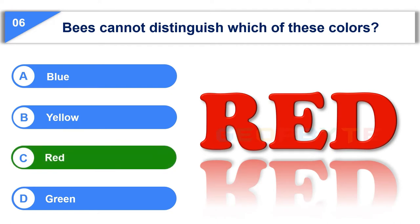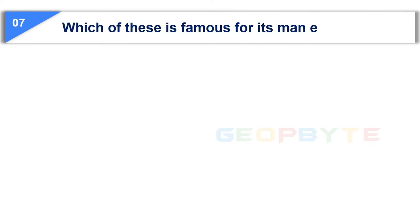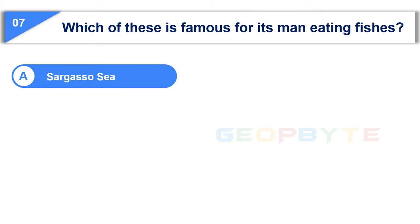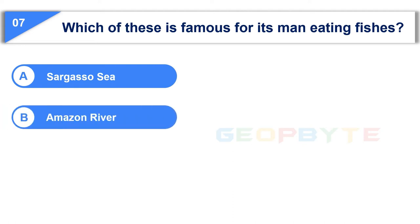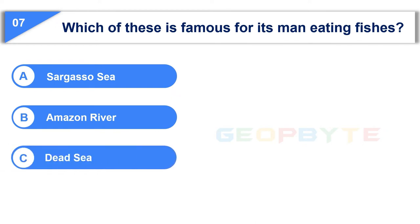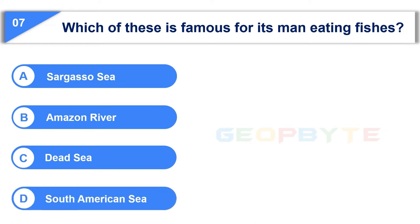The seventh question is: which of these is famous for its man-eating fishes? Option A: Sargasso Sea. Option B: Amazon River. Option C: Dead Sea. Option D: South American Sea. Your time starts now.